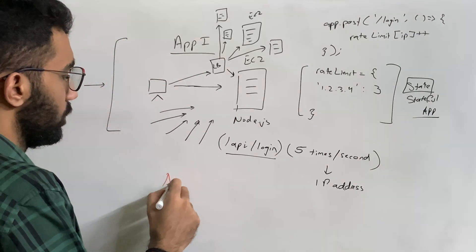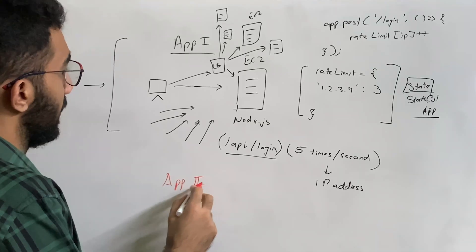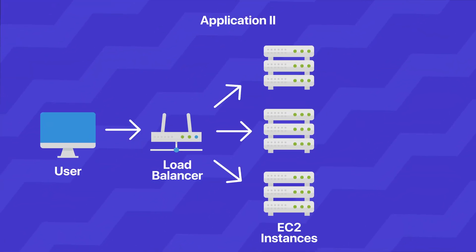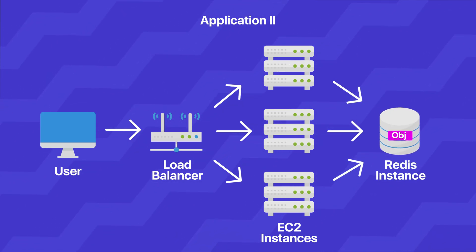But in this case, for example, what we can do, in case of app two, because we have already the architecture with us, you have the load balancer here, and then you have multiple EC2 instances. So now, instead of storing this object inside the node memory, instead of doing that, what you do is you use maybe something like Redis instance, which is like a shared Redis instance by all these EC2 instances.